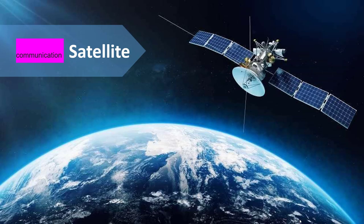A communications satellite is an artificial satellite that transmits signals via a transponder by creating a channel between the transmitter and the receiver located at different locations on Earth. Telephone, radio, television, internet, and military applications all use satellite communications.